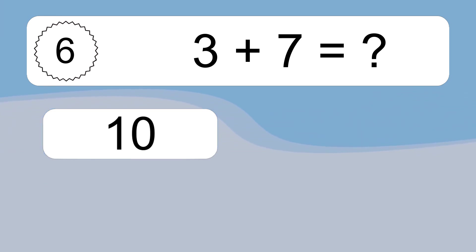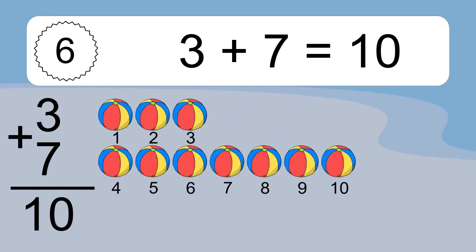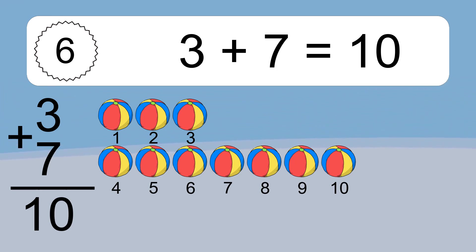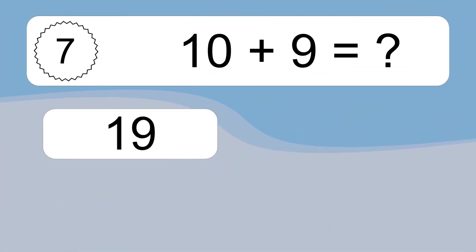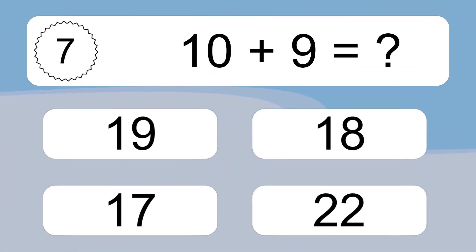3 plus 7 equals what? 3 plus 7 equals 10. Let's count it. 1, 2, 3, 4, 5, 6, 7, 8, 9, 10.